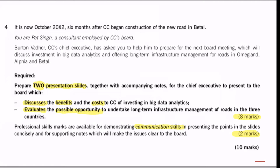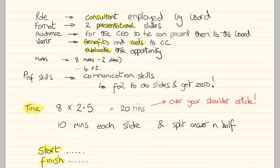As always when we look at a question, let's take the six steps. My role is as a consultant. The format required is two presentational slides. I'm producing these for the CEO who's going to present them to the board, and the verbs are about discussing benefits and costs for slide one, and evaluating the opportunity for slide two. I'm going to get a total of eight marks — two slides, so four marks each. Professional skills marks are for communication skills. When professional skills marks are awarded for communication, it's very important that we observe the format, because if you fail to follow the format you will not get any professional skills marks.